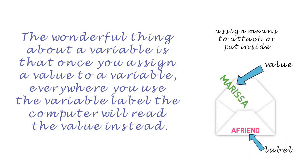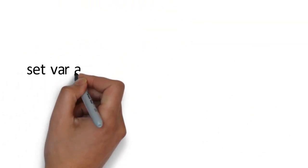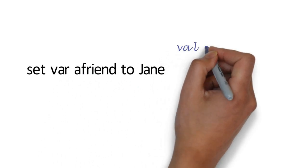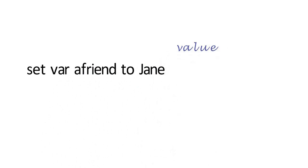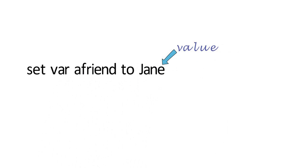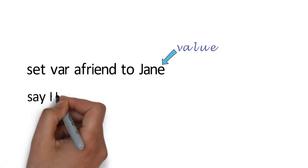Let us spend some time unpicking this idea in a written algorithm before we look at some code examples. This puts the value Jane inside the variable with the label a friend. I have written var so that I remember that the next word will be a variable. In the next line of my algorithm, I want the computer to use the variable, then read the label and display the value.